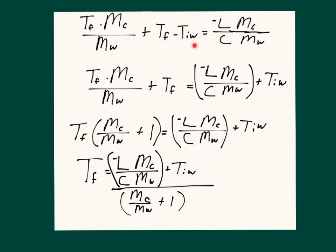Now T_initial can be added to the other side. We get T_final times (mass of cold water over mass of warm water) plus T_final, which equals the right-hand side. Factor out T_final — it leaves a one — giving T_final times (mass of cold water over mass of warm water plus one). Then divide both sides by that bracketed quantity to isolate T_final. That is our equation for the final temperature.